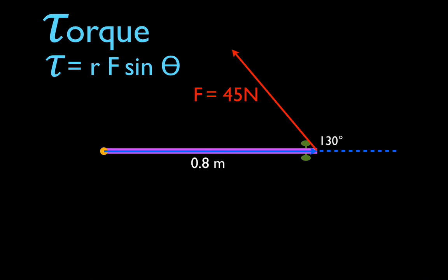Let's go over a couple of examples. Here we have a common example — this purple bar is a door. This is the radial vector; it extends from the axis of rotation along to the end of the object. You're looking at the door from the top, looking down. This is the axis of rotation, and these are the door handles for reference. There's a force applied to the door at an angle of 130 degrees between the radial vector and the force vector, and the force is 45 newtons. R is 0.8 meters, F is the given force, and theta is 130 degrees.